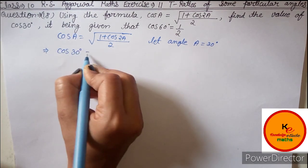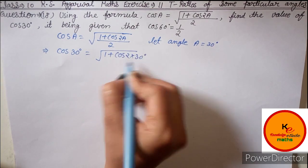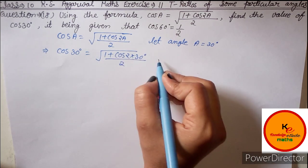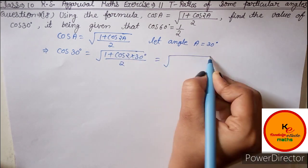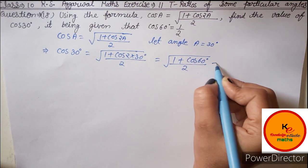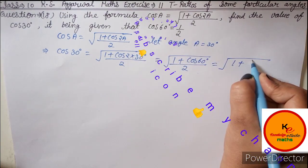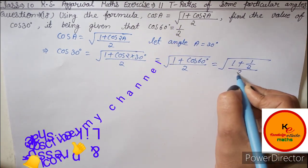So we will write cos 30 degree is equal to under root of 1 plus cos 2 into 30 degree upon 2. Then we solve it: under root of 1 plus cos 60 degree divide by 2 is equal to under root of 1 plus, cos 60 degree ki value given hai in question, one by two upon 2.